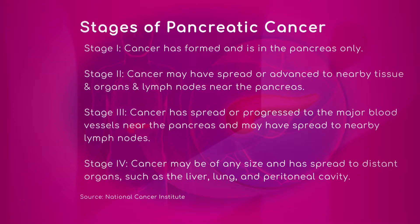Stage one is one of the earliest forms of pancreatic cancer. The tumor is confined to the pancreas, it hasn't begun to grow outside of the pancreas, and all the lymph nodes once removed were negative — the cancer didn't spread to the lymphatics.